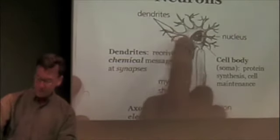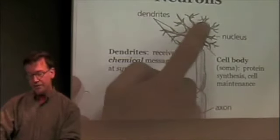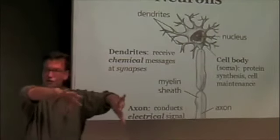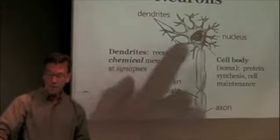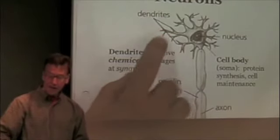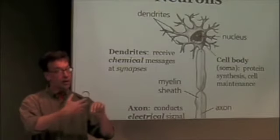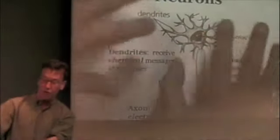Projecting off the cell body is this great diversity of tree-like extensions. And again, I want you to think about even these tree-like extensions, these dendrites, actually, are surrounded by phospholipid bilayer, as is the soma.